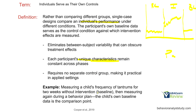For example, we measure the frequency of tantrums for two weeks without intervention — that's our baseline, our control. Then we measure it during a behavior plan, which is our intervention, and we compare the control baseline to when the intervention was active to see how the behavior changes.